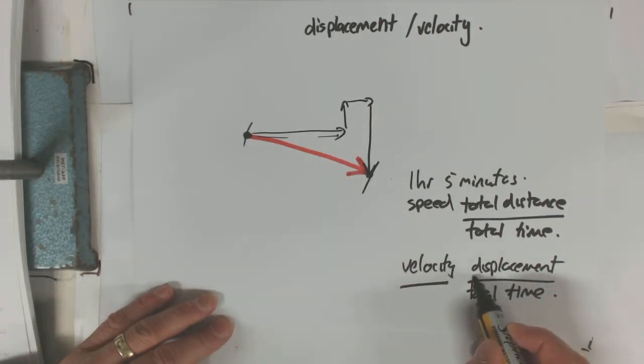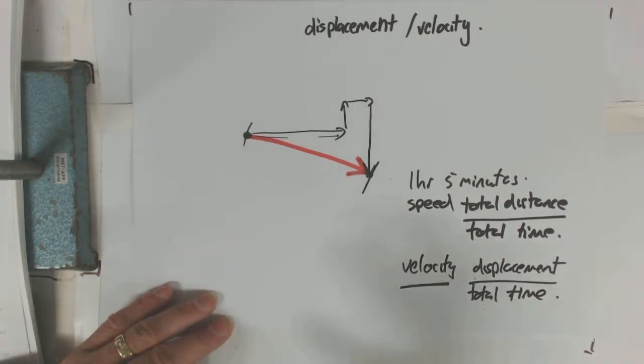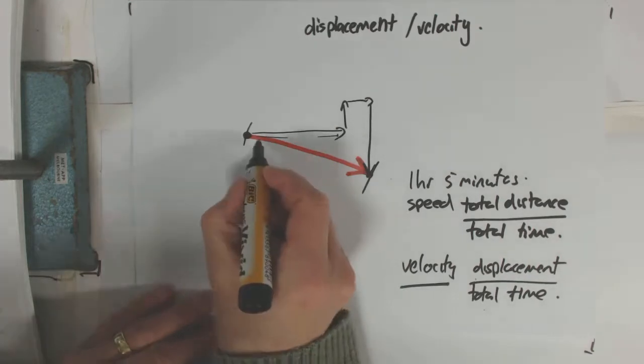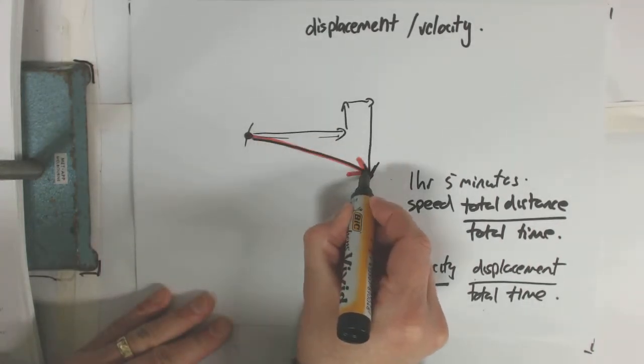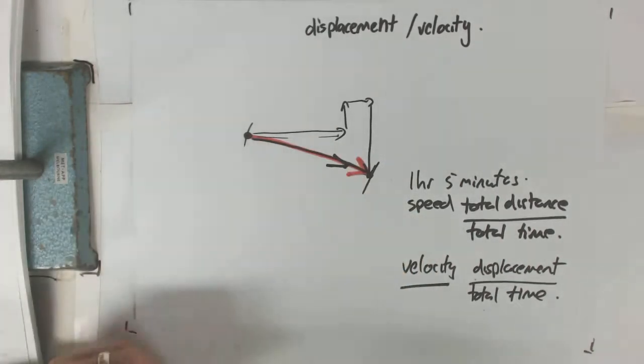The vector part is your displacement. Time isn't a vector. But you end up with a vector. And the vector will be in the same direction as your displacement, not necessarily the same size.